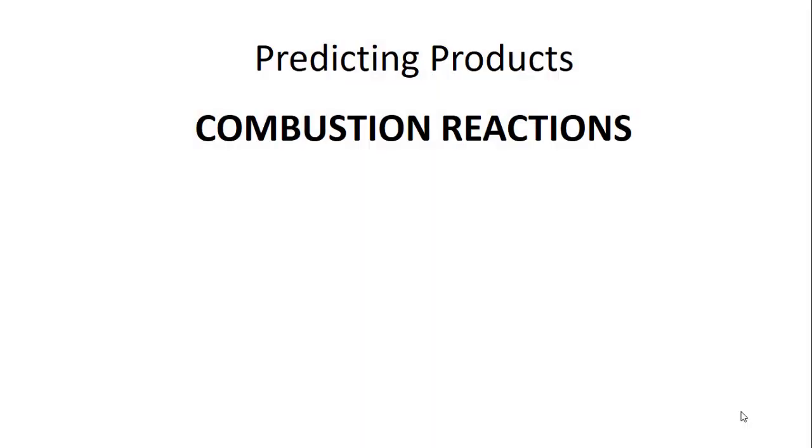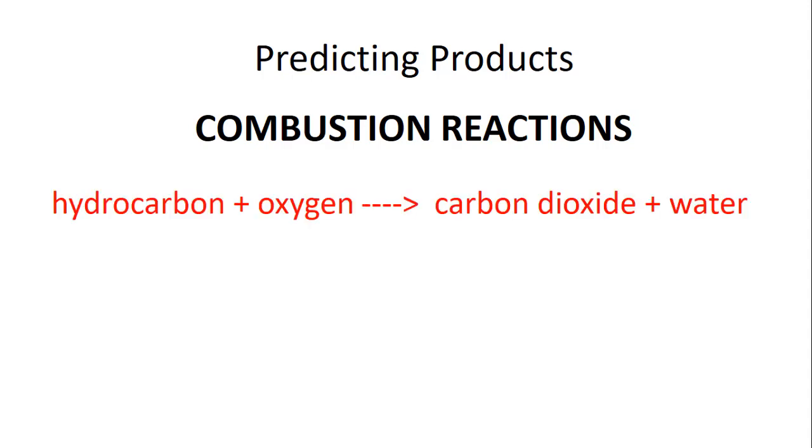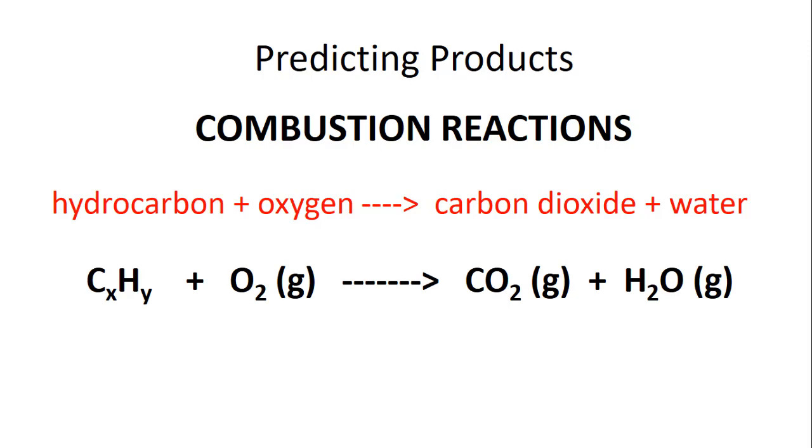In this section, we will learn about predicting products of combustion reactions. Combustion reactions are defined as having a hydrocarbon and oxygen as reactants and having them turn into the products carbon dioxide and water. A hydrocarbon can often be written as CxHy. That simply means that the subscripts can change. They don't always have to be the same number. They fluctuate. What's consistent on the reactant side is that you will always see oxygen gas being used from the atmosphere. Oxygen gas is a necessary ingredient to have a hydrocarbon burn.